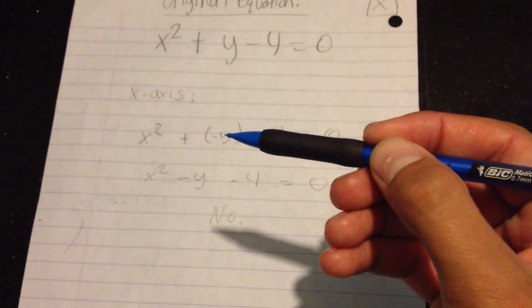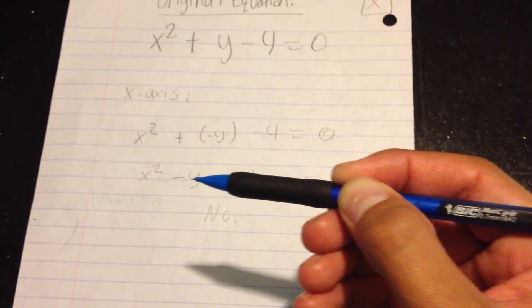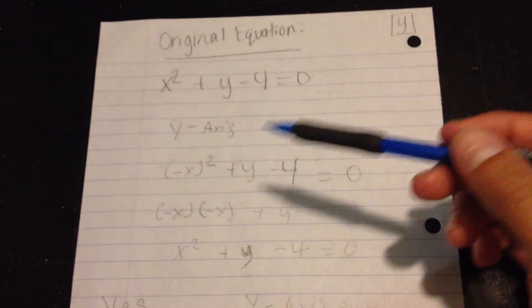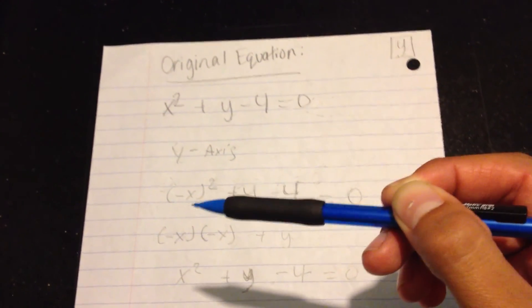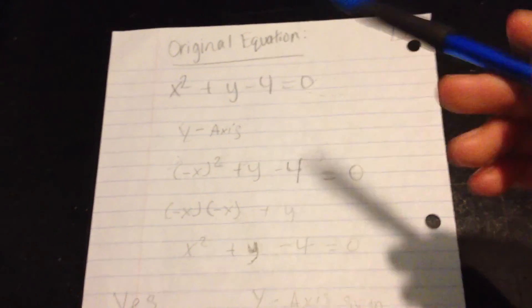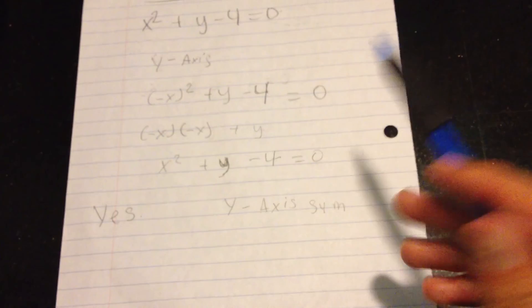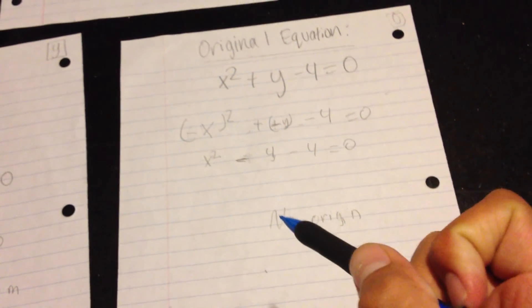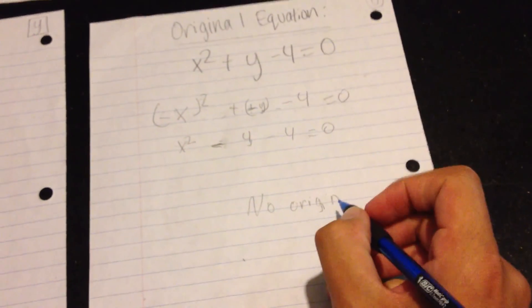So, in summary, we started off with the x-axis, and when we substituted the y for negative y, we ended up with a negative down here, so no x-axis symmetry. When we substituted x with negative x for y-axis symmetry to test, we ended up with the same equation, so we ended up with a yes, there is y-axis symmetry. And for origin, because there wasn't x-axis symmetry, but we did have y, there's no origin symmetry.